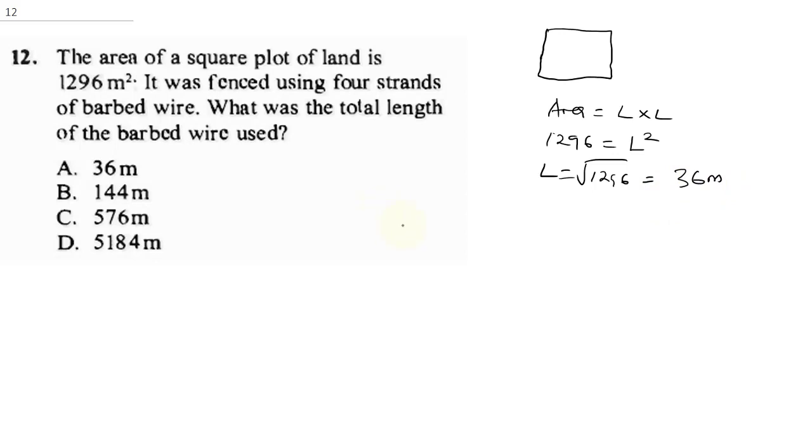Now, the length of the barbed wire, I want you to notice that this is the square farm. This is how the barbed wire went. This is line one, line two, line three, and line four. So here you're going to have one, two, three, four. And same to here, two, three, and four.